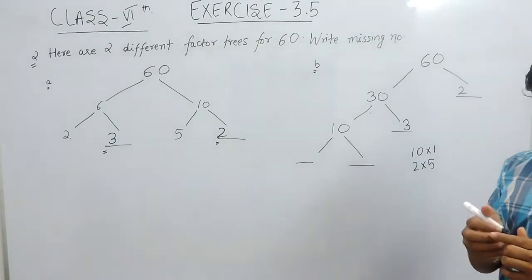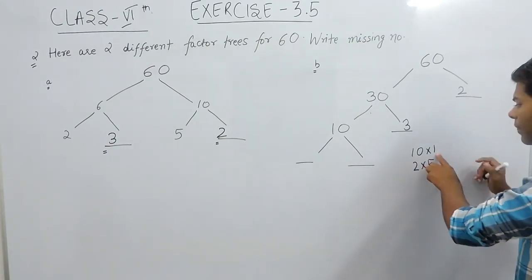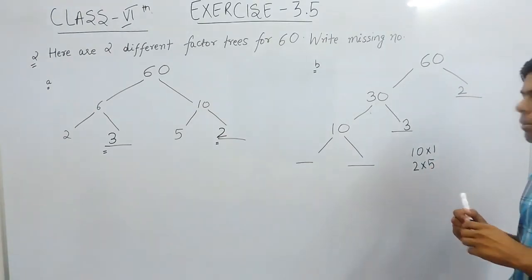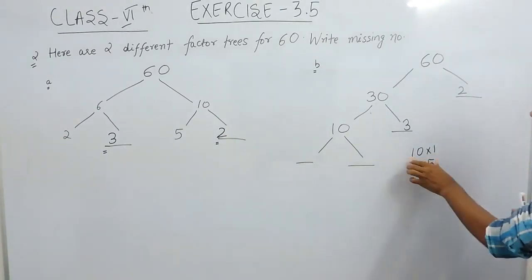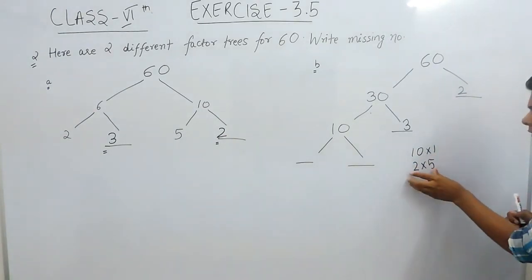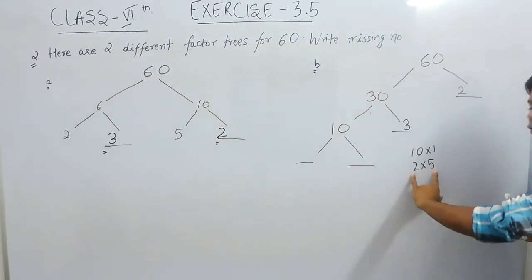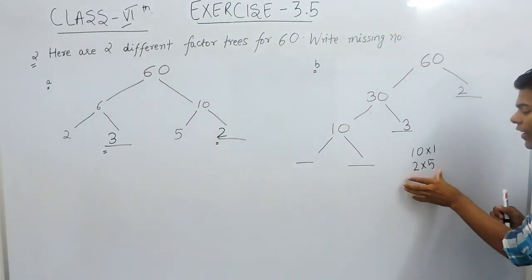But we can ignore 1 if possible, since 1 is a factor of every number. So if we get a choice, we can write either option, but if there is 2 multiplied with 5, neither of them is 1, and they are both different factors.